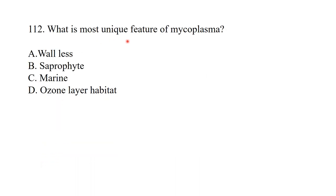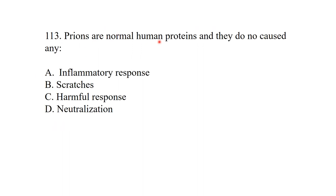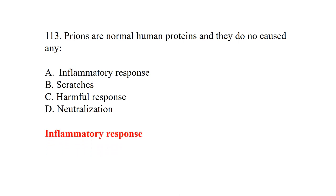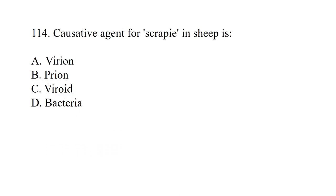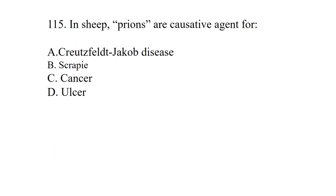The capacity of a given strain of microbial species to produce disease is known as virulence. Monoclonal antibodies are associated with the name Bernhardt. Lederberg and Tatum described the phenomenon of conjugation. Griffith reported the phenomenon of transformation first in pneumococci. The hanging drop method for motility study was first introduced by Leeuwenhoek. The most unique feature of Mycoplasma is that they have no cell wall — wall-less is the best answer. Prions are normal human proteins and they cause no inflammatory response. In sheep, prions are the causative agents for scrapie.